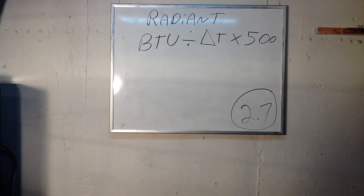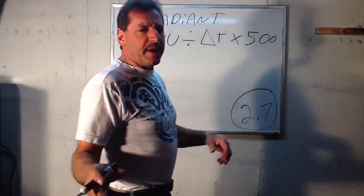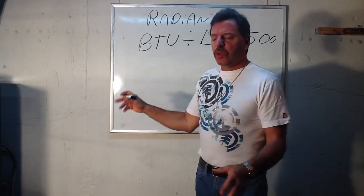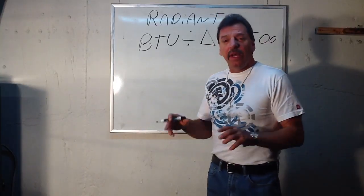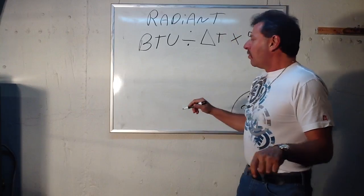And by the way, a simple little tip in the math, guys. I know we use 20 as the Delta T for baseboard, but a lot of people are doing radiant heat now and that's a little bit different.